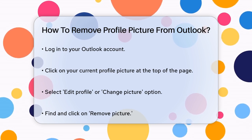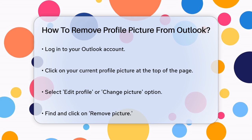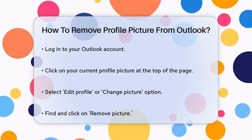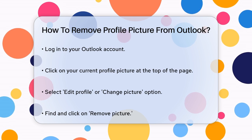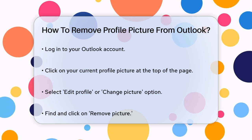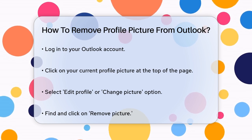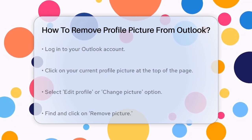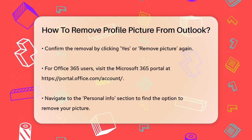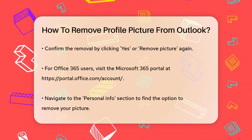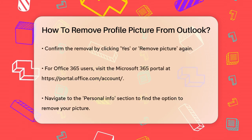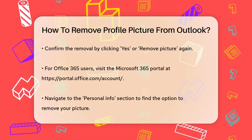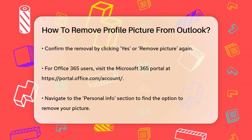First, you need to log in to your Outlook account. Once you're in, click on your current profile picture at the top of the page. This will take you to the profile settings. Next, select the option to edit profile or change picture. Here, you'll find the option to remove picture. Click on this and then confirm by clicking yes or remove picture again.